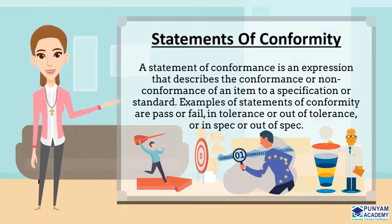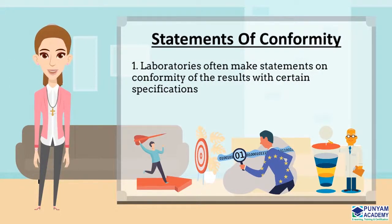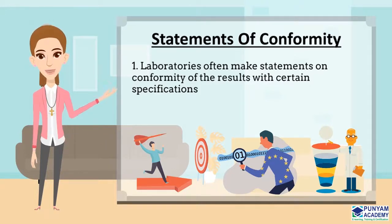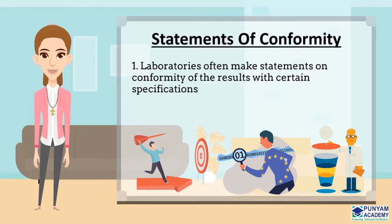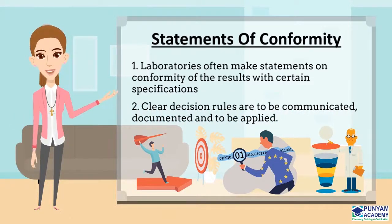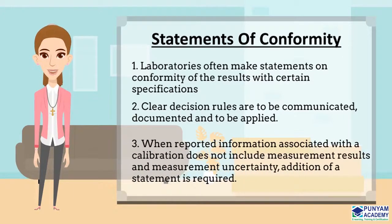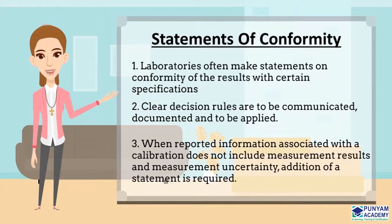Now that you are aware of what statements of conformity are, here are some points to keep in mind. (1) Laboratories often make statements on conformity of results with certain specifications. For test laboratories, this is done based on the customer's request against a defined documented specification. For calibration laboratories, the instrument is required to pass or fail against the defined specification or class of instrument after calibration. (2) Clear decision rules are to be communicated, documented, and applied. (3) When reported information associated with a calibration does not include measurement results and measurement uncertainty, addition of a statement is required.